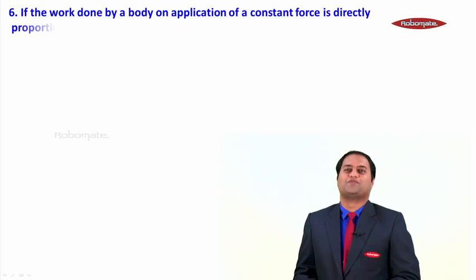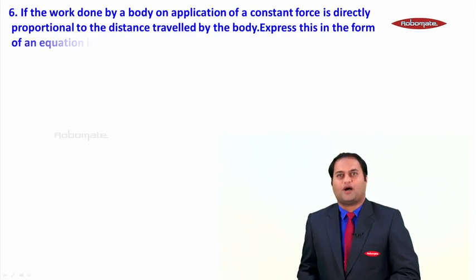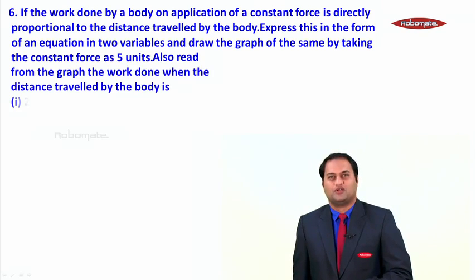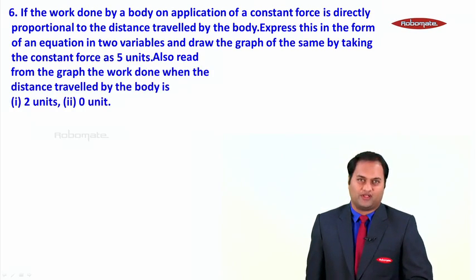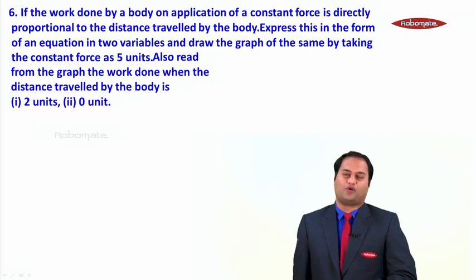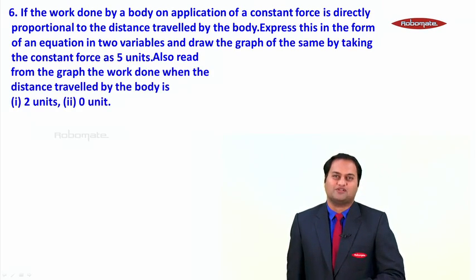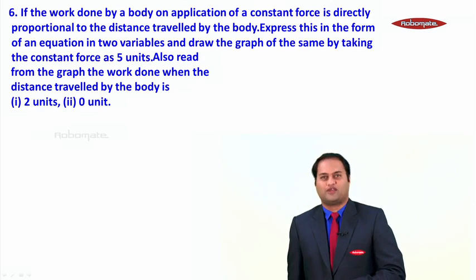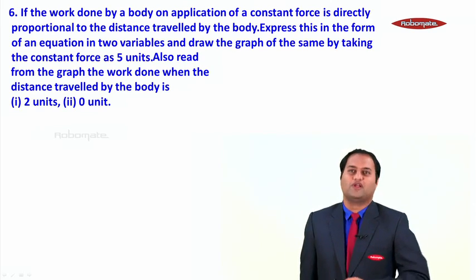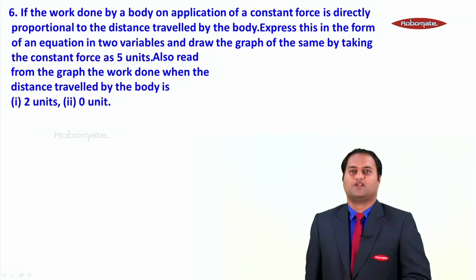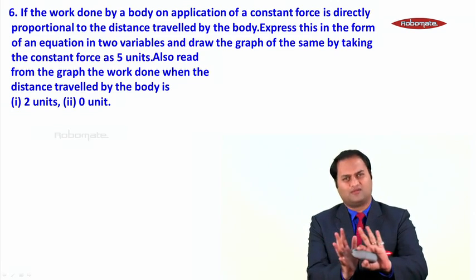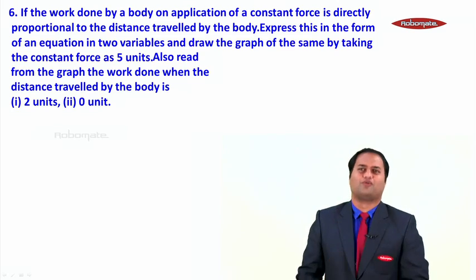Let us do a very interesting sum. The sum is: if the work done by a body on application of a constant force is directly proportional to the distance travelled by the body, express this in the form of an equation in two variables and draw the graph of the same by taking the constant force as 5 units. Let us also read from the graph the work done when the distance travelled by the body is 2 units and 0 units. First, let us form the equation.